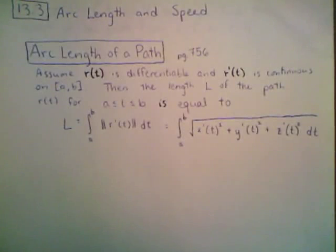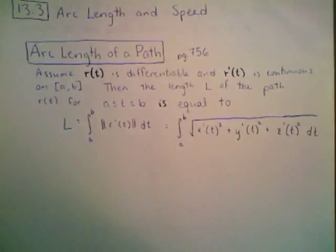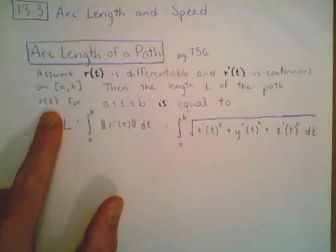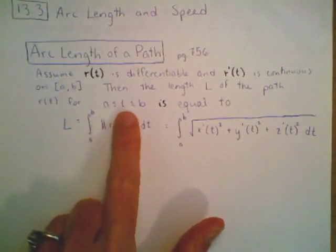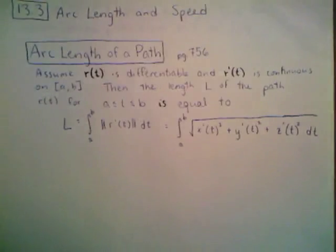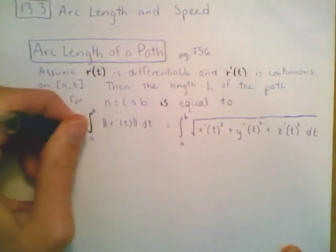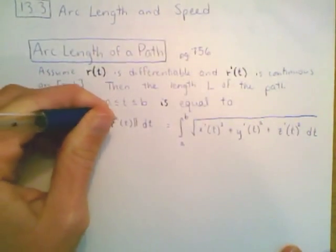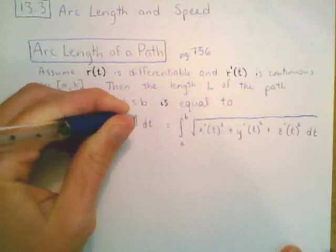Next let's talk about section 13.3 which covers arc length and speed. We'll start with the definition from page 756 of our book. It says: assume r of t is differentiable and r prime of t is continuous on a to b. Then the length l of a path r of t for t between a and b is given by the integral from t equals a to b of the magnitude of r prime of t dt.